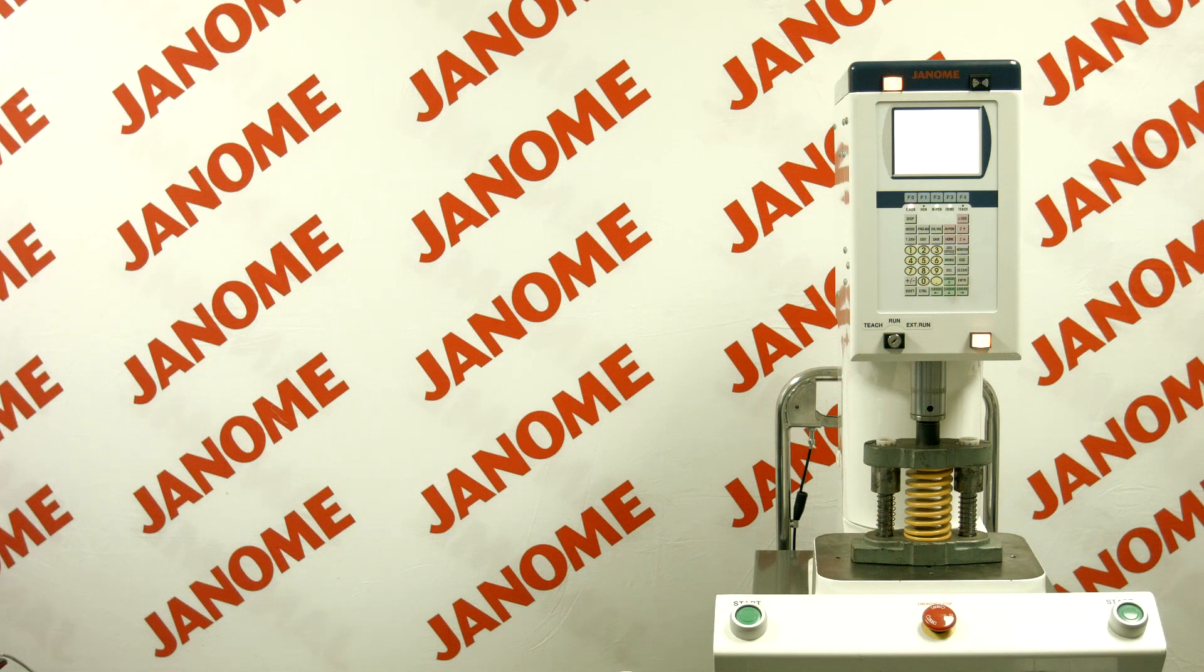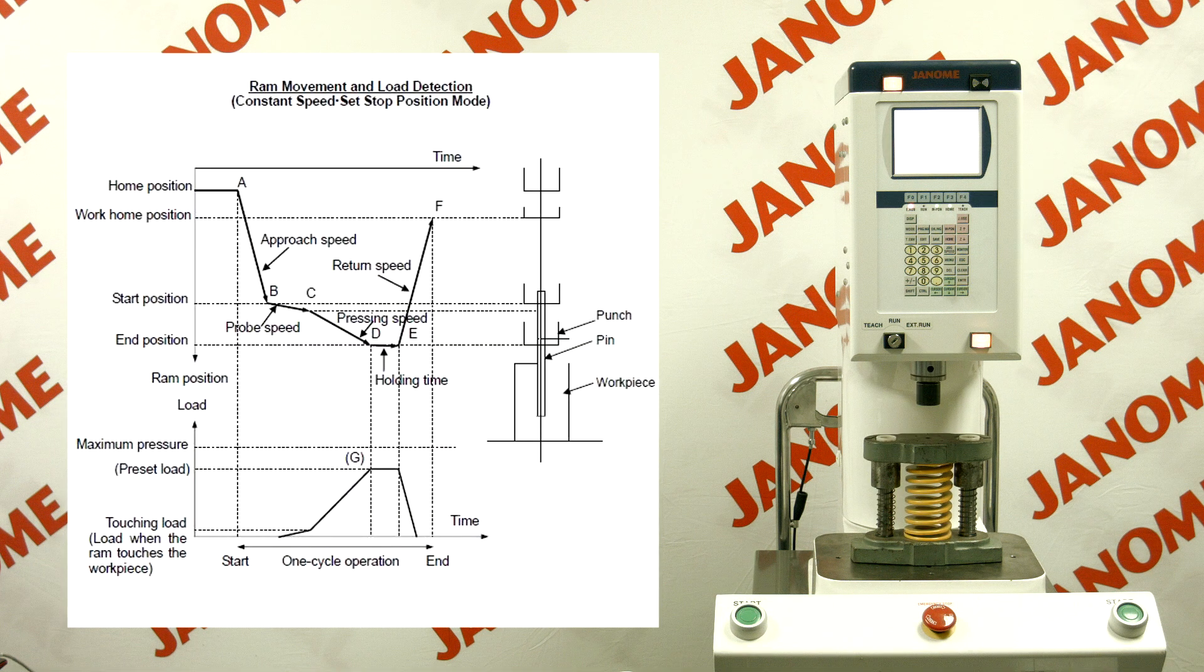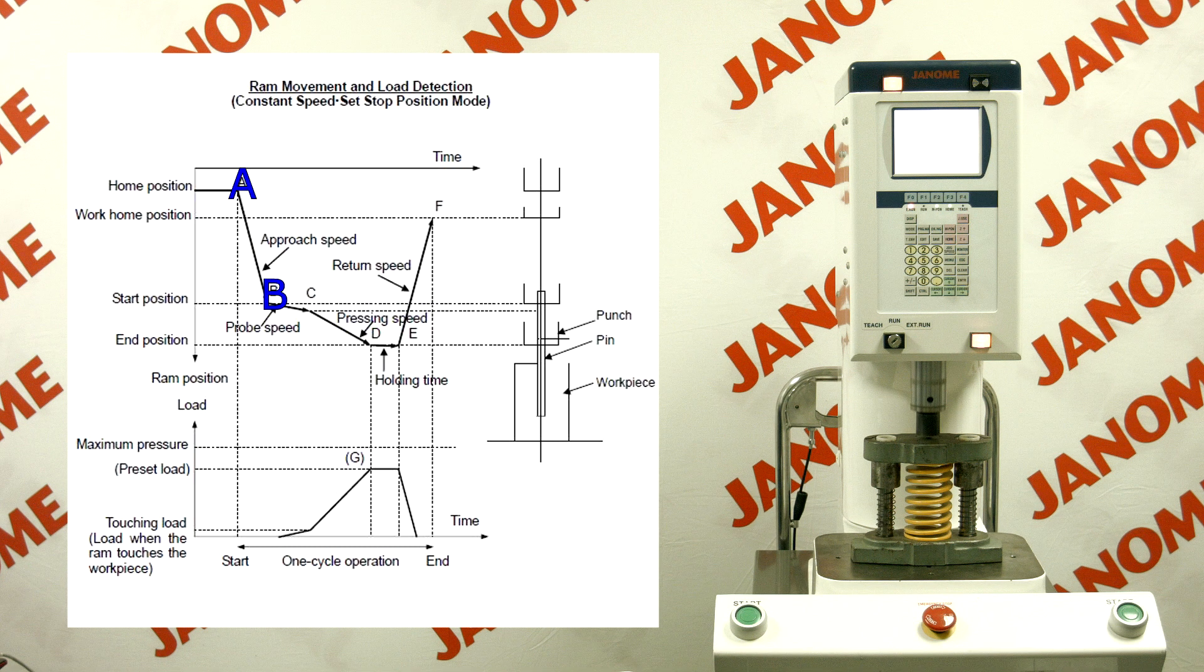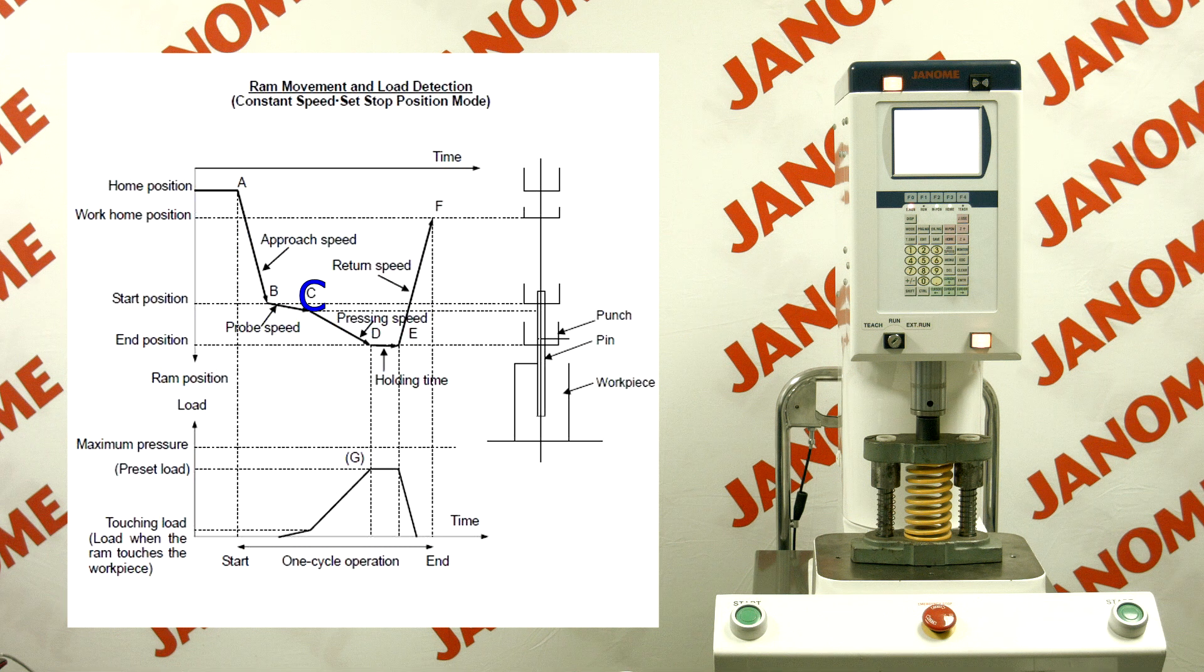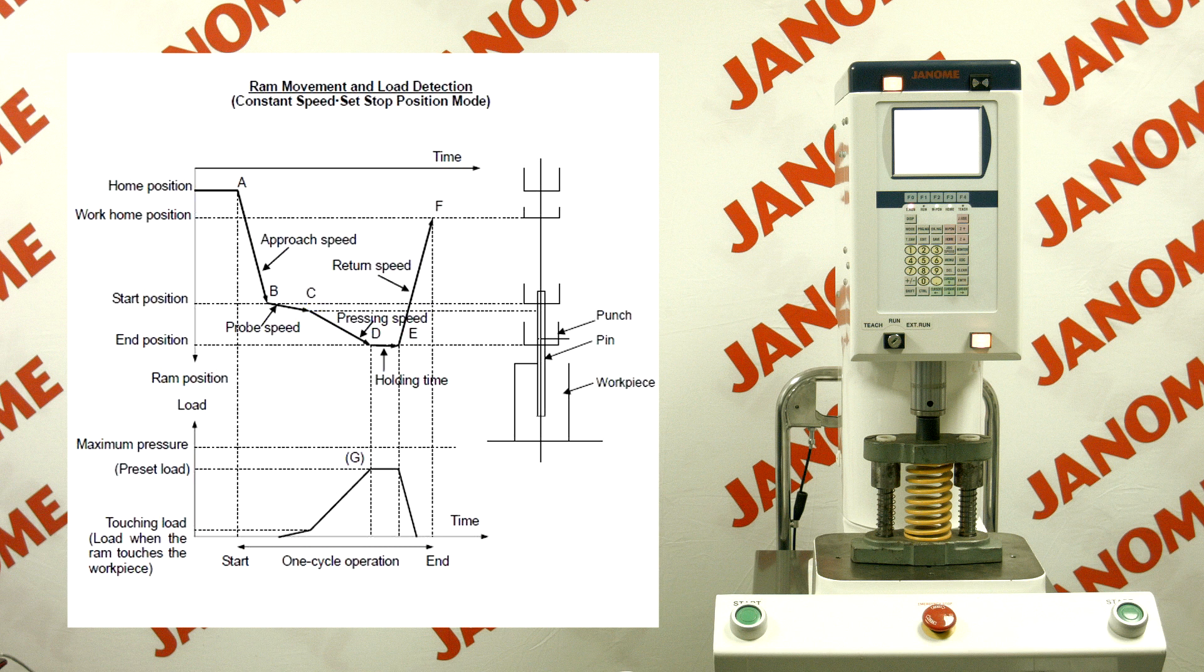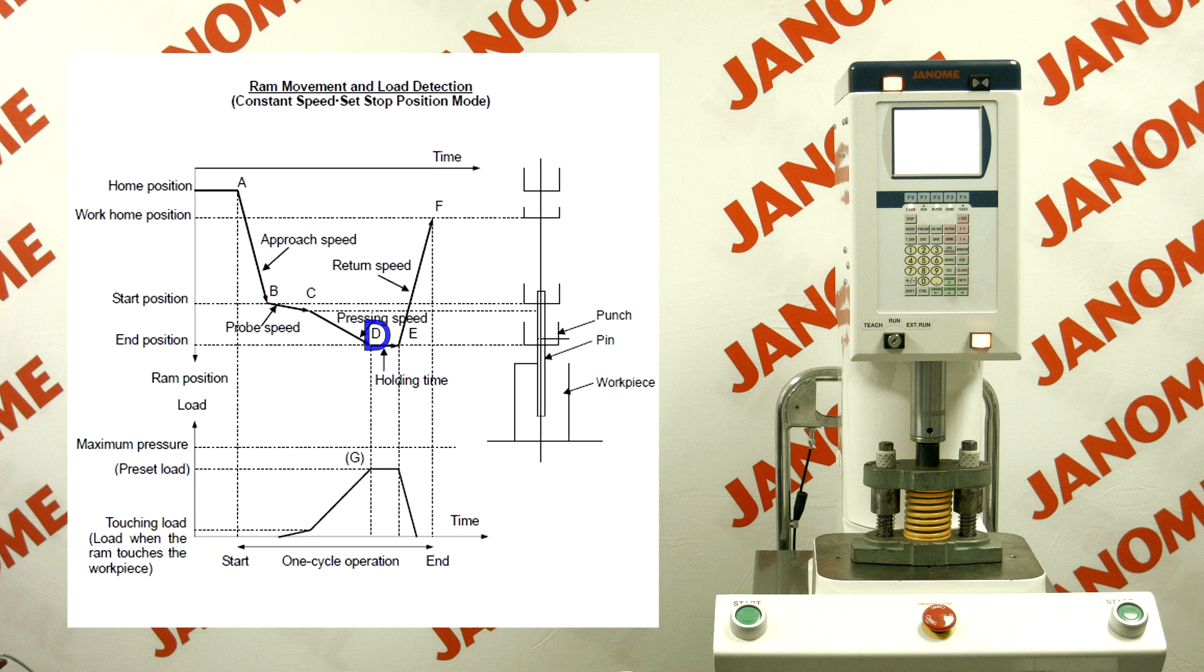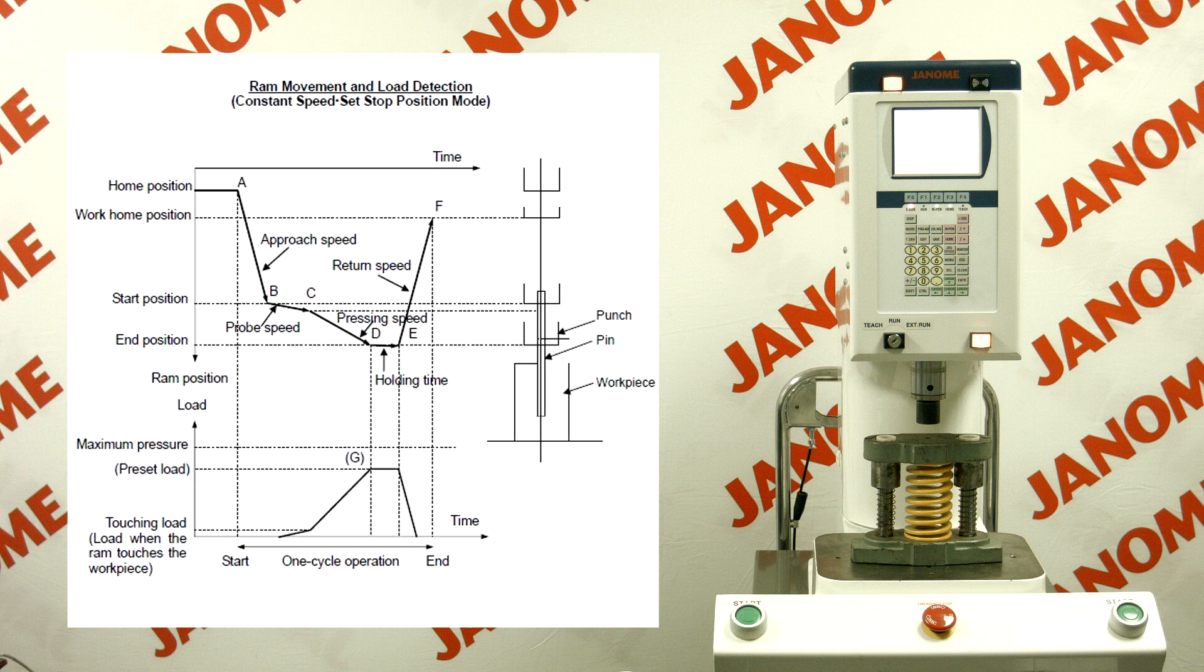We will now examine the constant speed set-stop position mode in detail. When the start switches are pressed, the RAM will descend from the home position, A, to the start position, B, at the approach speed. The RAM will then descend slowly at the probe speed until it touches the workpiece. After the RAM reaches the touching load, C, the speed will change to the pressing speed, and the RAM will descend to the end position, D, and will perform the pressing. After the holding time, E, at the end position, the RAM will ascend to the work home position, F. This is the end of one cycle of operation.